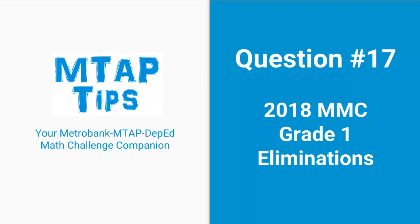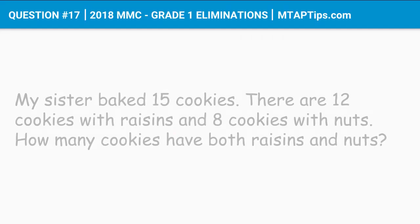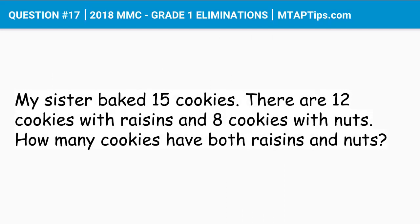Question number 17 for the 2018 MMC Grade 1 Eliminations. My sister baked 15 cookies. There are 12 cookies with raisins and 8 cookies with nuts. How many cookies have both raisins and nuts? Let's go ahead and try to solve this problem.